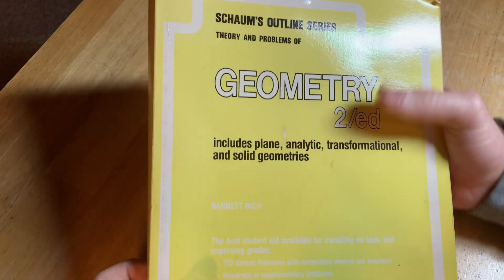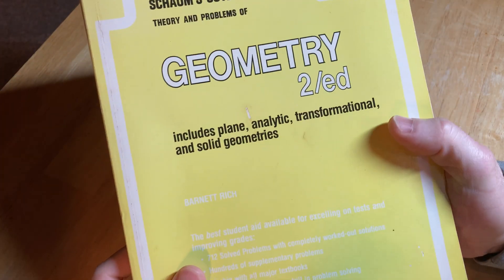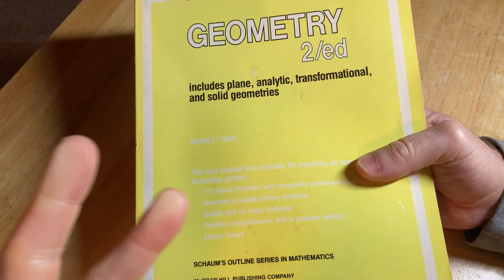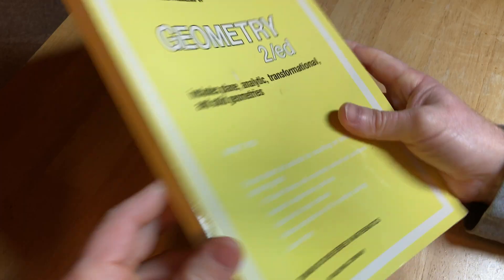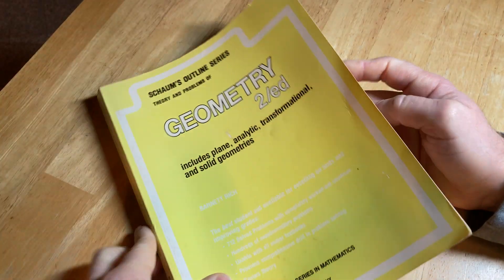It's the Schaum's Outlines series, Theories and Problems Geometry, 2nd edition. And this is an older edition. I'm pretty sure there's a newer edition out now. I'll try to find some copies and leave a link in the description in case you want to check it out.